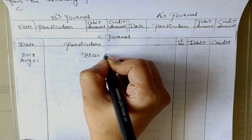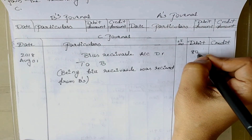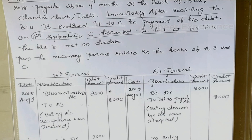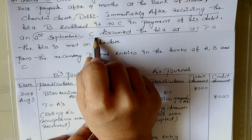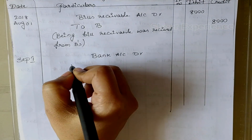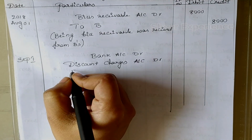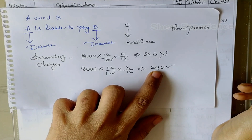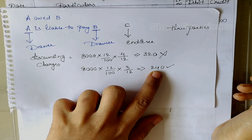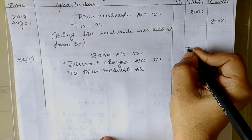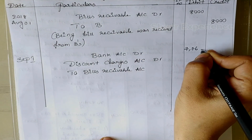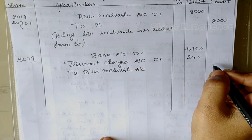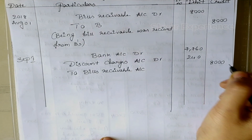Journal entry in C's books: Bills Receivable Account debit to B. Amount is 8000. C discounted the bill on 1st September at 12% per annum. Journal entry in C's books: Bank Account debit, Discounting Charges Account debit, to Bills Receivable Account. Discounting charges are 240, so 8000 − 240 = 7760 is credited by bank to C's account. For Bank: 7760, Discounting Charges: 240, Bills Receivable: 8000.